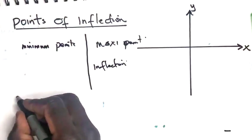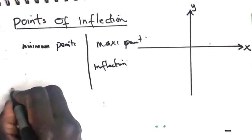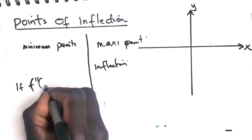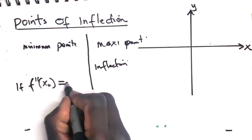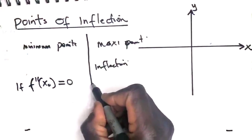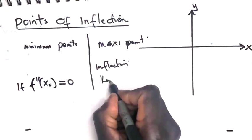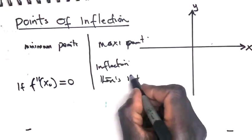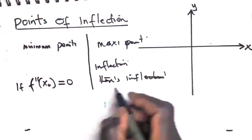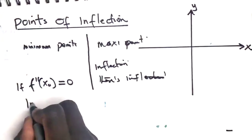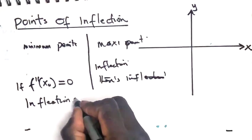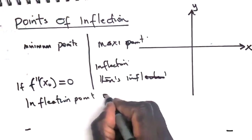So mathematically, you can say if f double prime of x is zero at that point, then there is an inflection point on the curve.